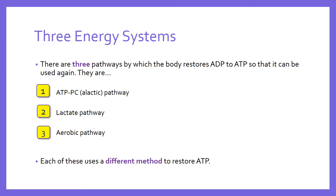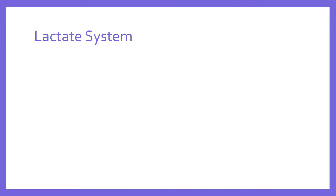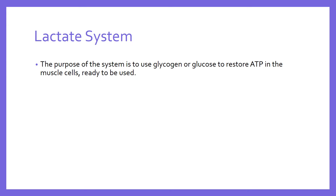We've looked previously at the ATP-PC system, and in this video we're going to look at the lactate pathway, sometimes called the lactic acid system. The lactate system works basically by using glycogen or glucose as the fuel to restore ATP — to take ADP and find energy from somewhere to resynthesize ATP. This process is known as glycolysis.